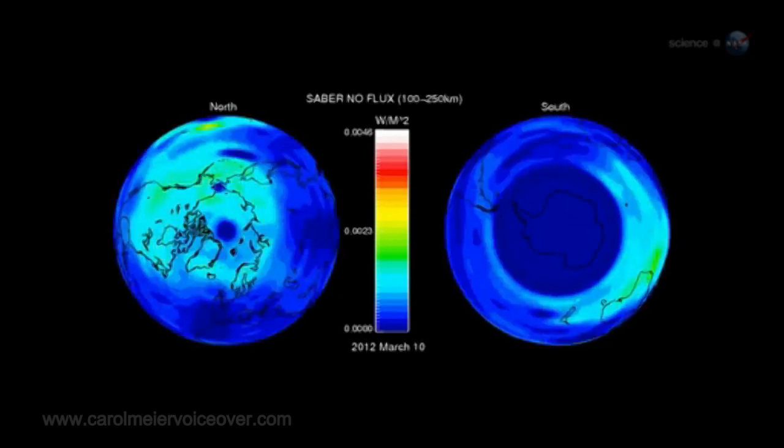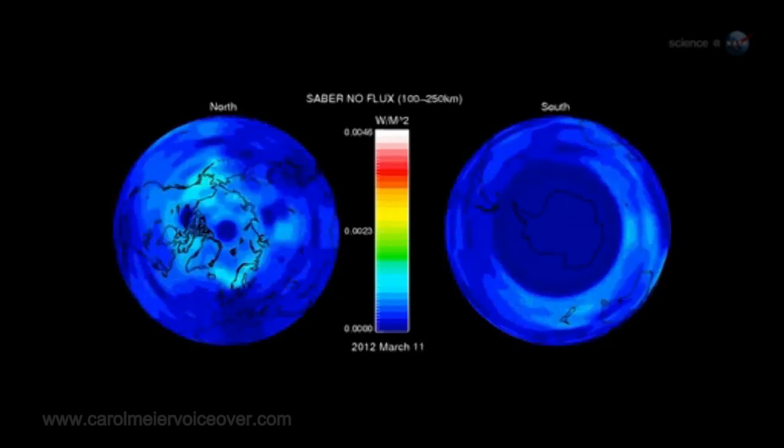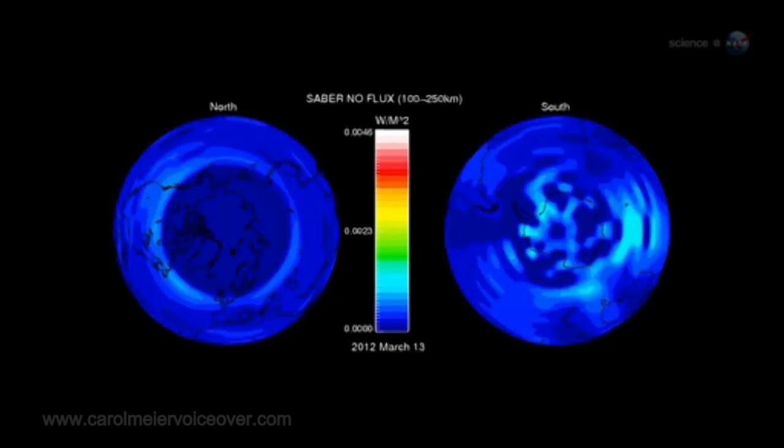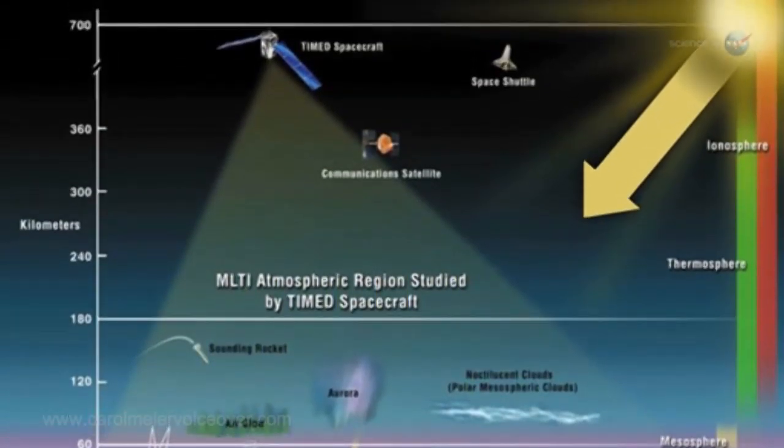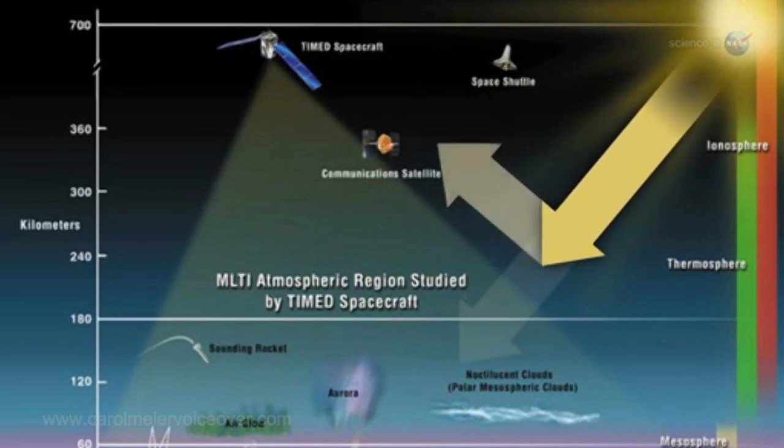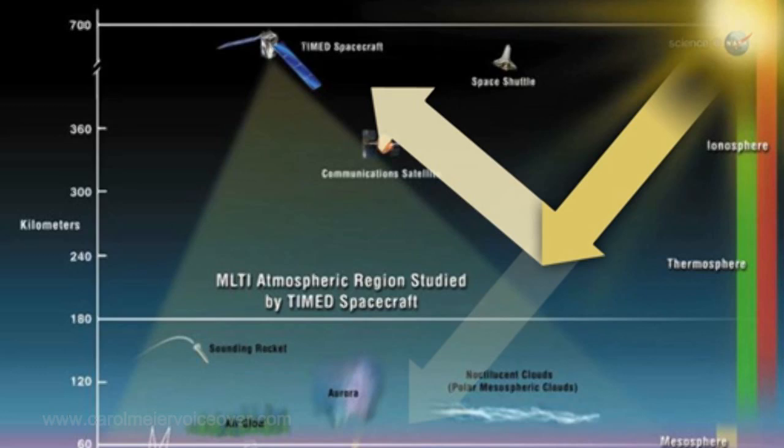For the three-day period March 8th through 10th, the thermosphere absorbed 26 billion kilowatt-hours of energy. Infrared radiation from CO2 and NO, the two most efficient coolants in the thermosphere, re-radiated 95% of that total back into space.